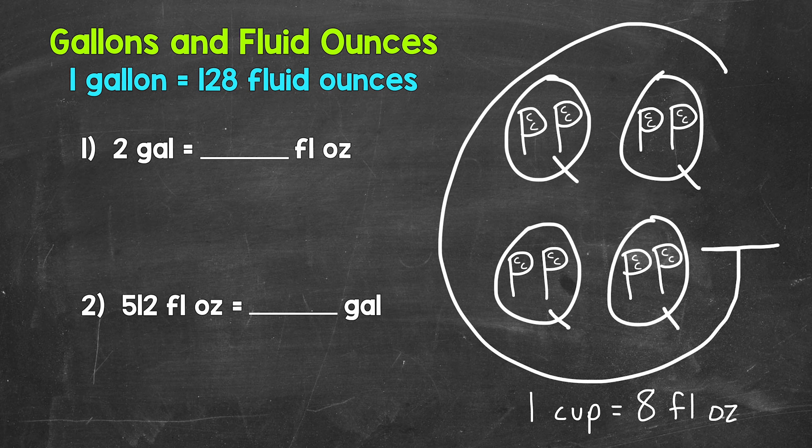To start, there are 128 fluid ounces in a gallon. In other words, one gallon equals 128 fluid ounces.